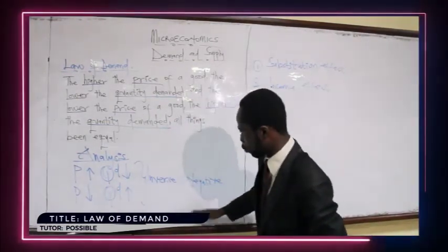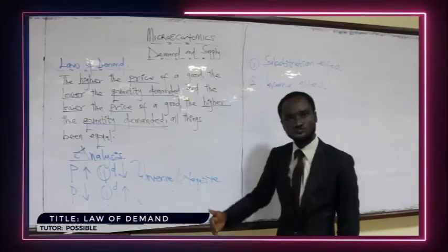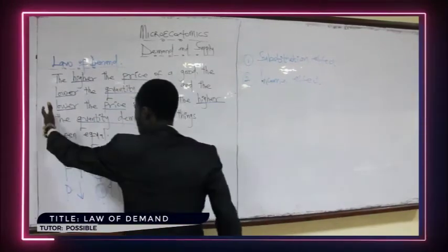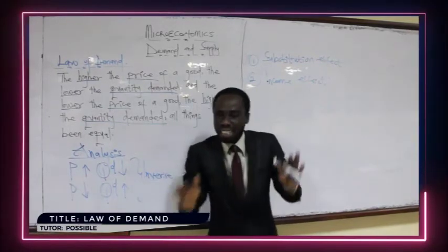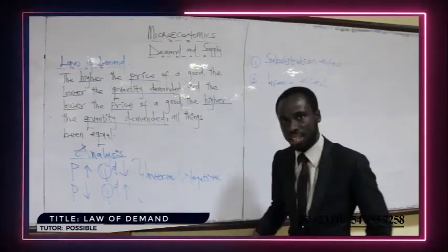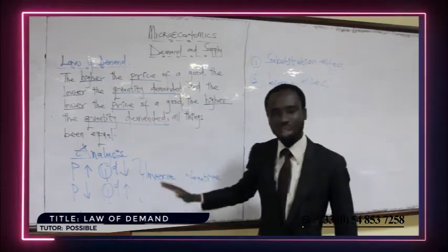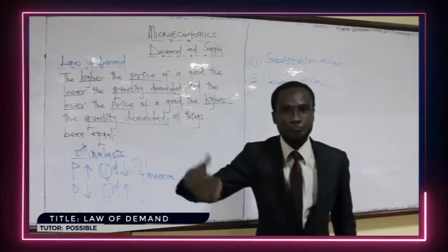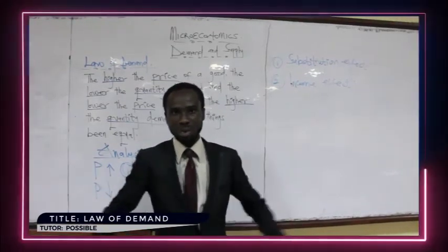Having understood this and the inverse relationship between price and quantity demanded, in our next lecture we are going to put things on the board. In economics we have theory and we have a model — the theory is the written aspect and the model is the diagrammatical, tabular, and mathematical expression or representation of the economic theory. In our next lecture we are going to look at the demand schedule, demand curve, and the demand function. Once again my name is Pascal — God bless you for following our lecture, make sure to watch the next one. Bye bye.